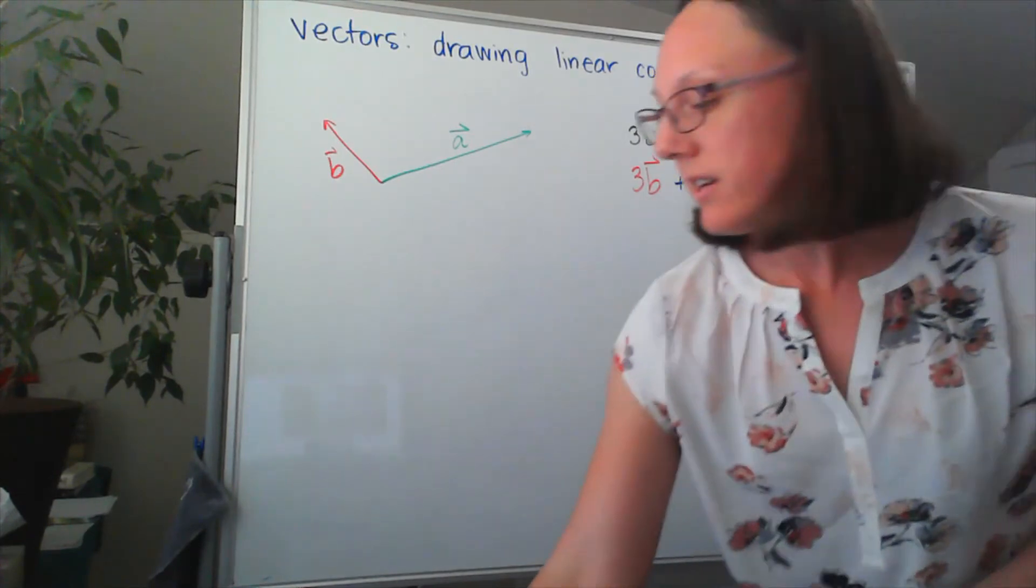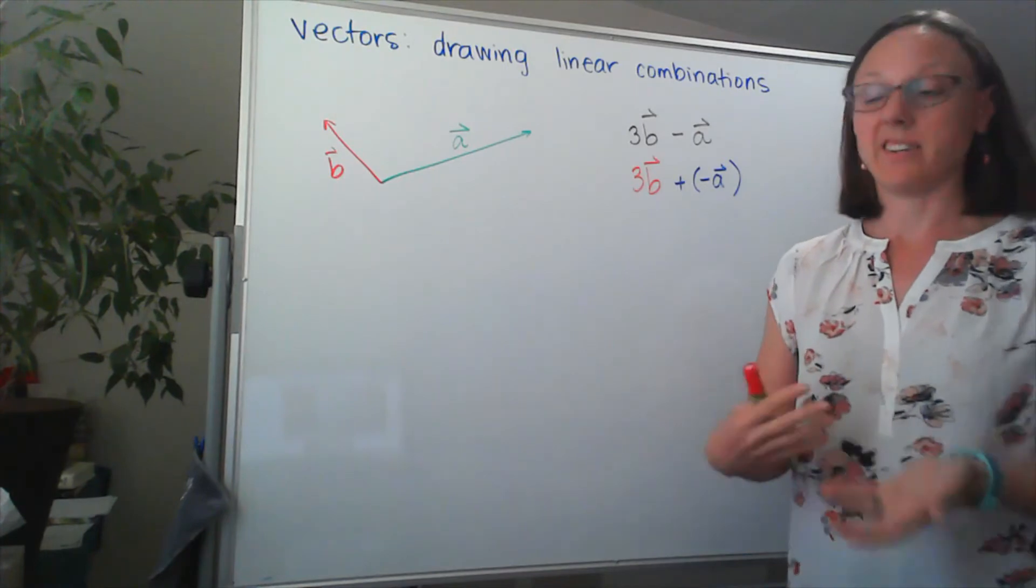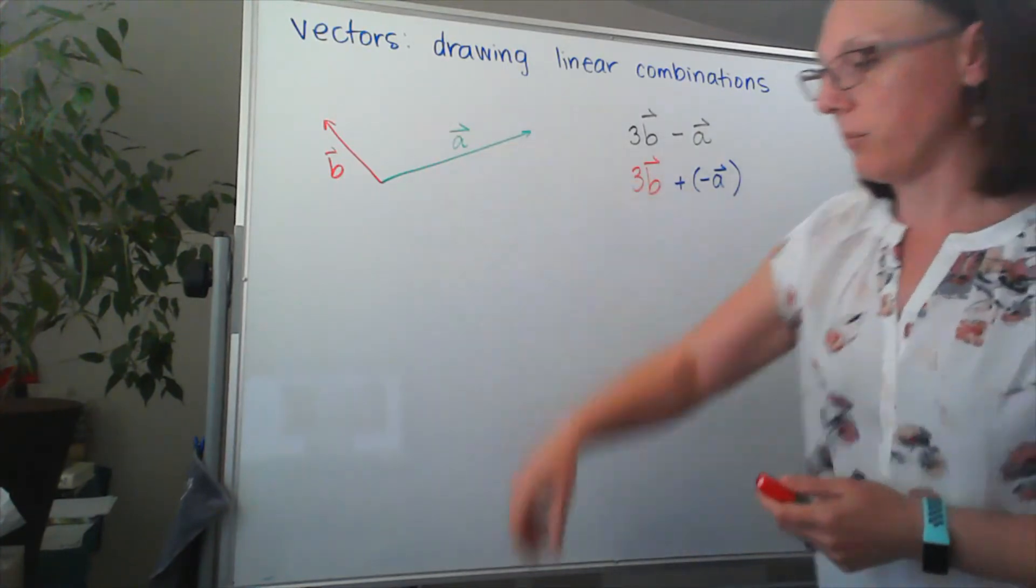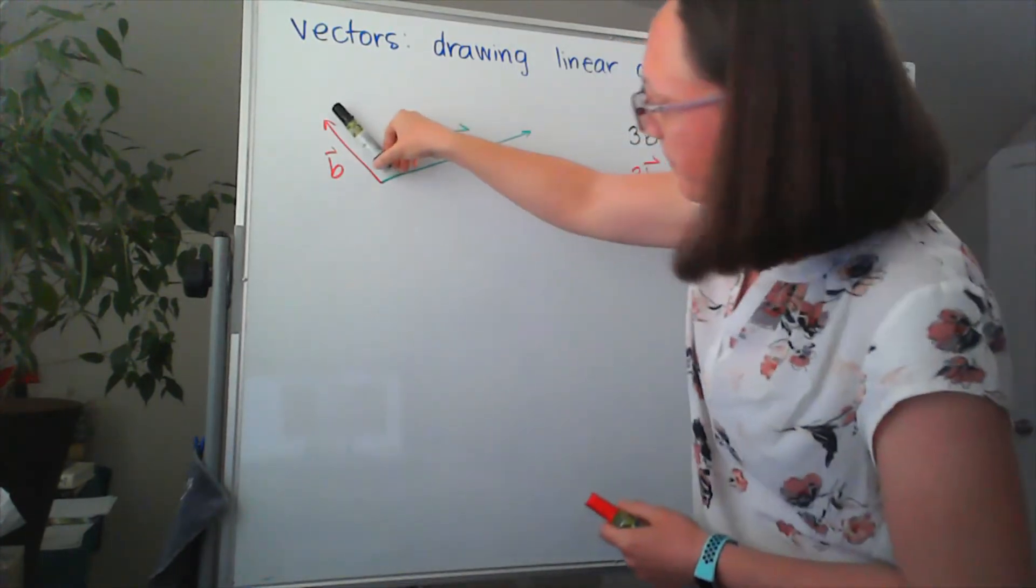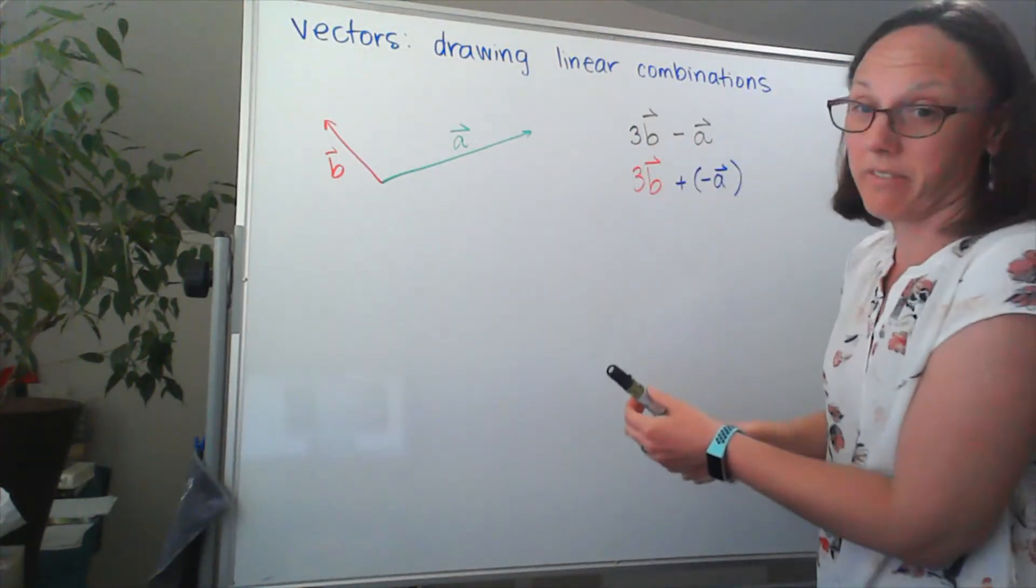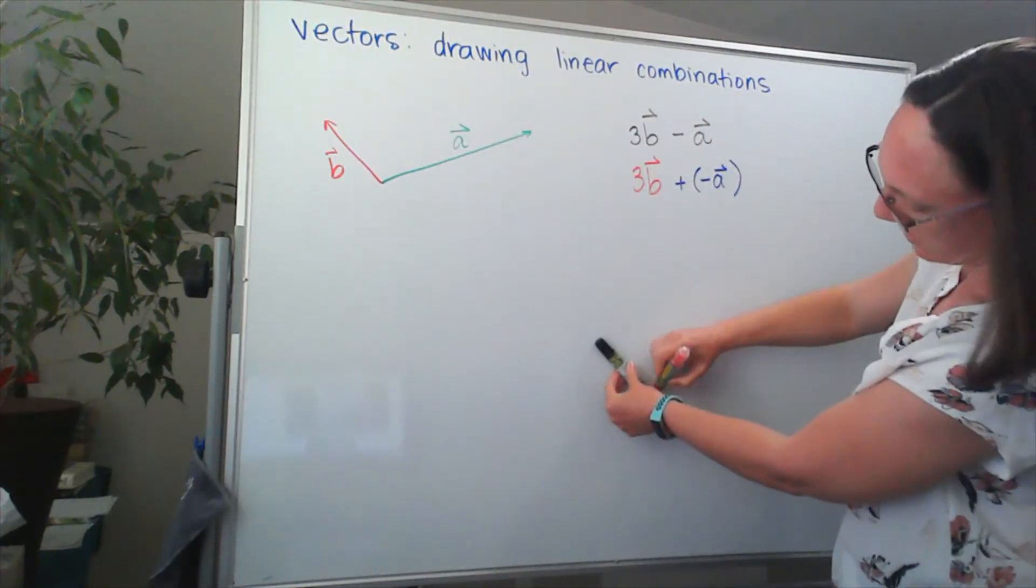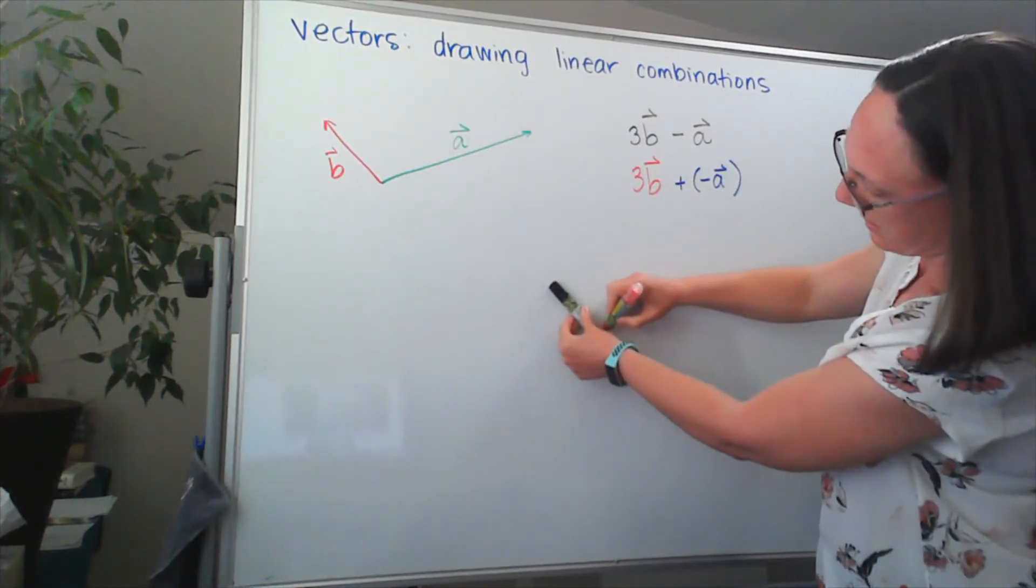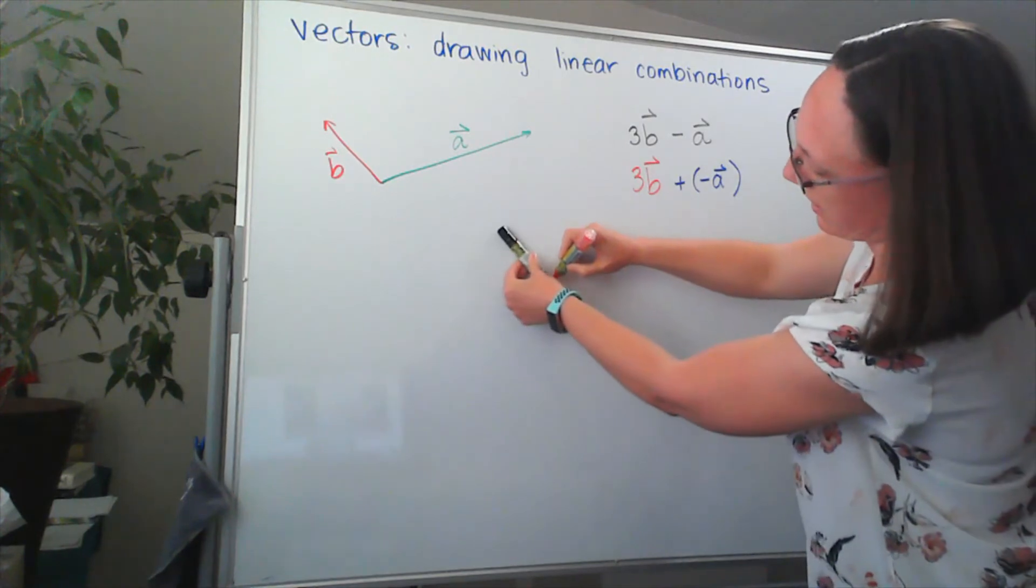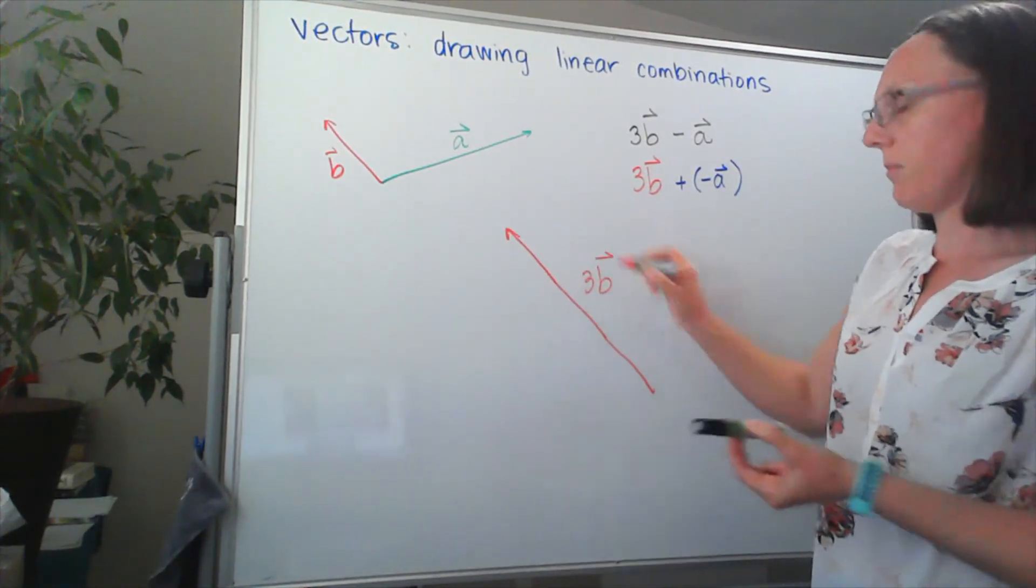When I go to sketch this, since I've rewritten this in a form where I'm adding, I can go head to tail again. So I'm going to take my B vector. And I need three of them. So I need a length of three, keeping that same angle. So there's one, two, and three. So there's my vector 3B.